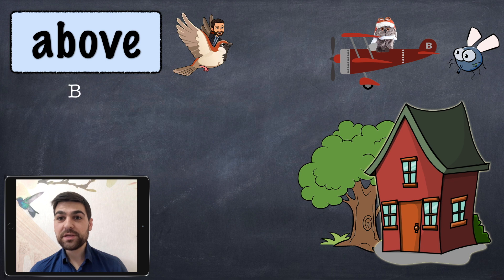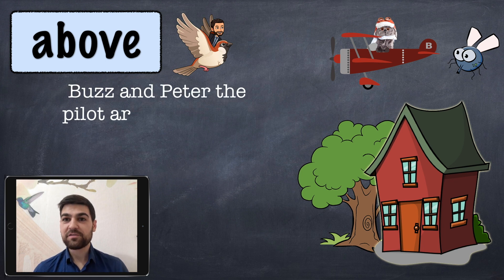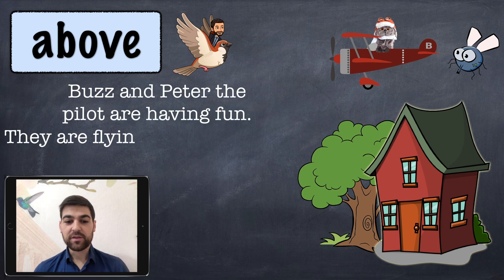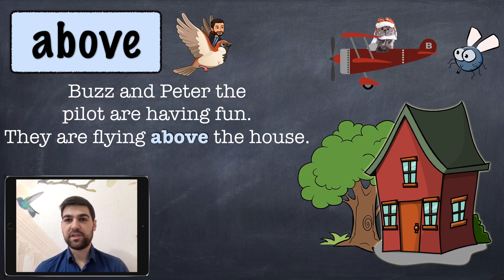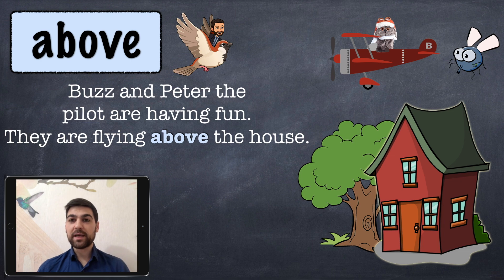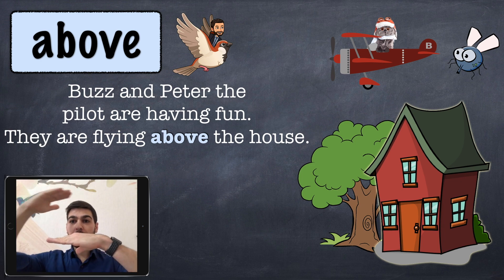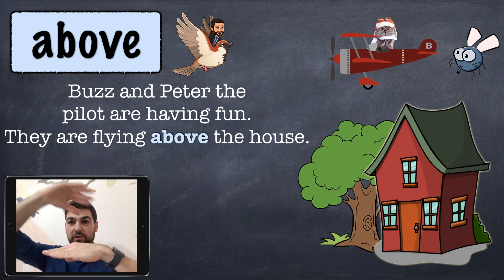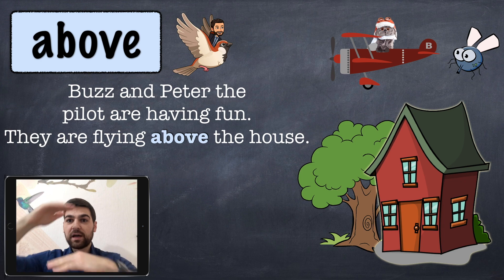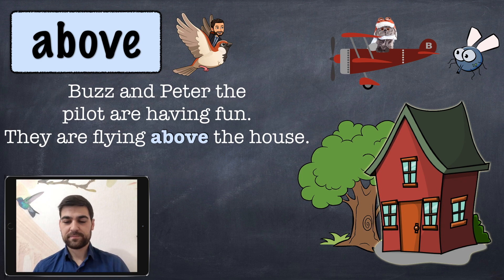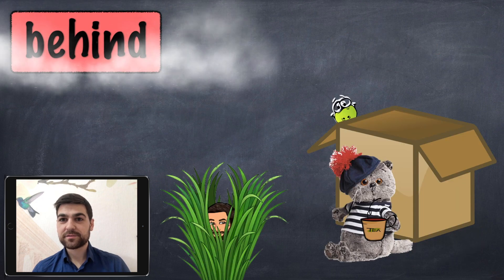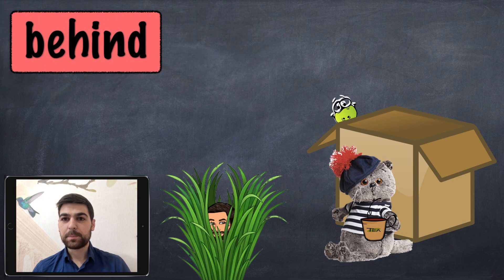Next, 'above.' Buzz and Peter the Pilot are having fun — they are flying above the house. You can see the house and the plane is above the house.